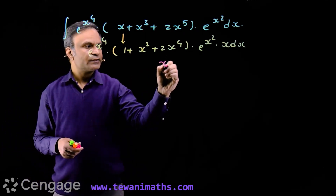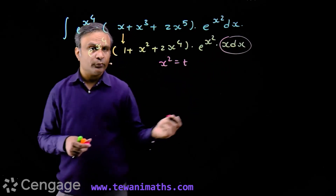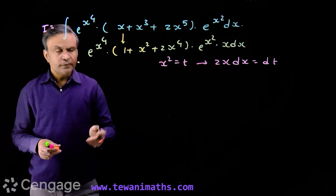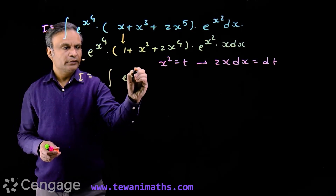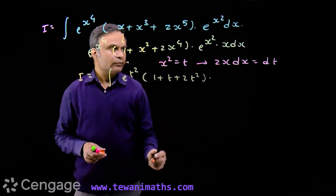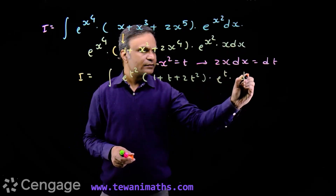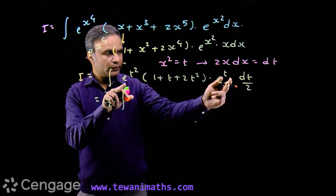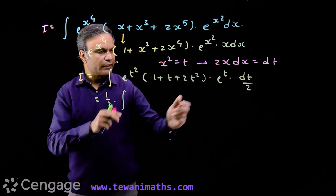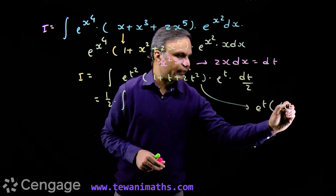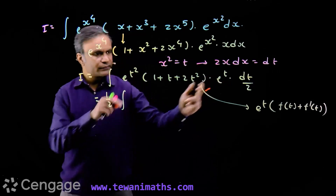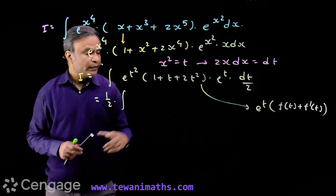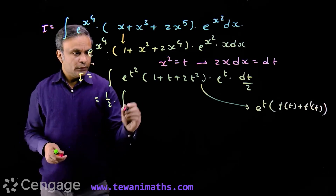We let x squared equal t, so 2x dx equals dt, meaning x dx equals dt over 2. The integral I becomes the integral of e^(t²) multiplied by (1 plus t plus 2t²) multiplied by e^t multiplied by dt over 2. So we have one-half times the integral of this function. Our aim is to write this as e^t multiplied by f(t) plus f′(t), and we will smartly multiply e^(t²) inside the bracket so that we identify f(t) plus f′(t).